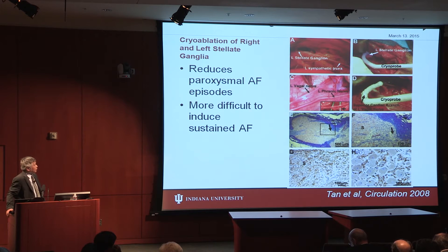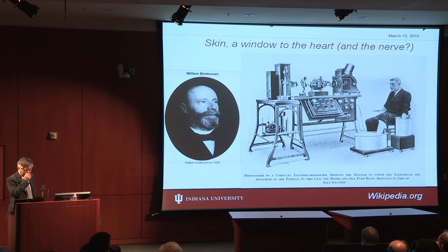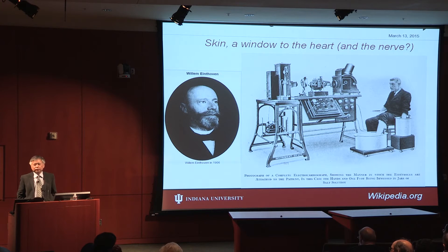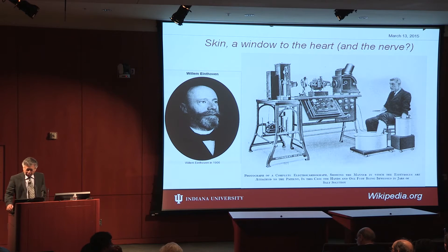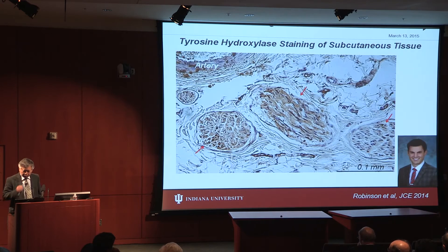Ablation of the ganglion plexi or stellate ganglion will reduce paroxysmal atrial fibrillation episodes and make AF more difficult to sustain. However, there is a frustration: this is very difficult to translate to patient care, in part because it is so difficult to record nerve activity. Dr. Joyner showed the standard technique this morning, but he also noted that for micro-neurography, the patient has to be at rest.